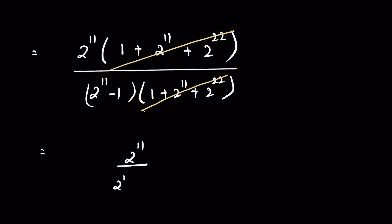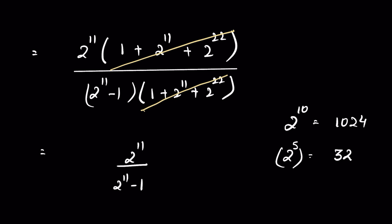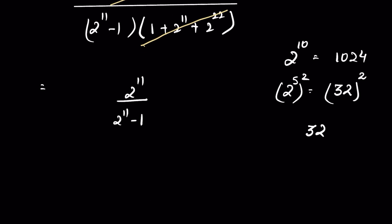Now we need to calculate 2¹¹. First, 2¹⁰ = 1024. We know 2⁵ = 32, so 2¹⁰ = (2⁵)² = 32². To find 32² without a calculator: write the square of 2 as 04, square of 3 as 9, then multiply 3 × 2 = 6 and double it to get 12. Writing these out and adding gives 1024.